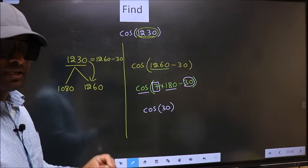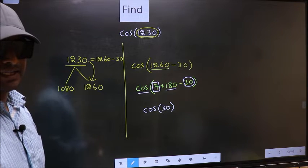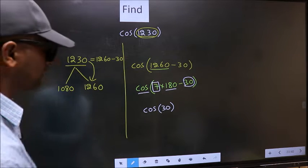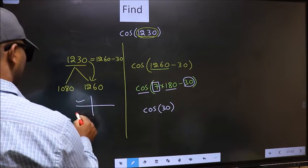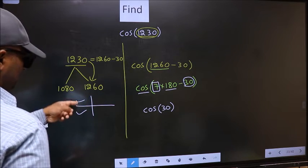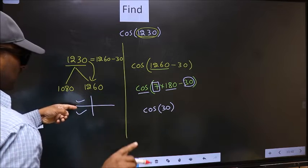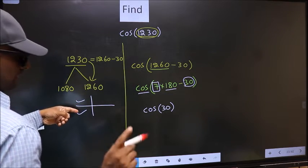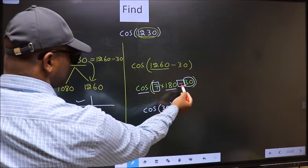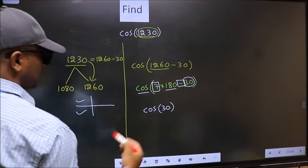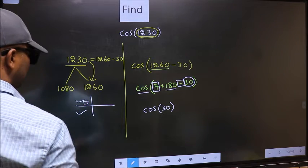And all the odd multiples of 180, they lie either in the second or in the third quadrant. So now, to select the quadrant, we should look at this symbol. Here we have negative. That means the angle lies in the second quadrant.